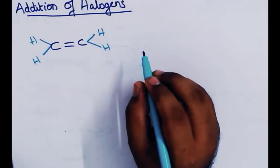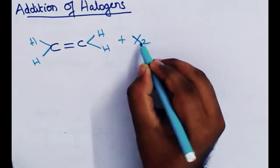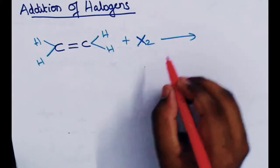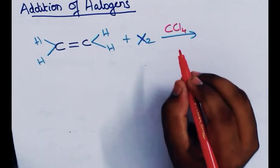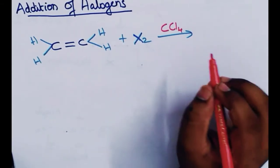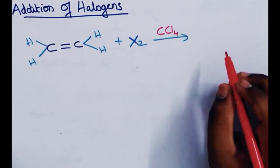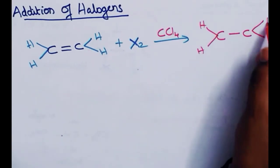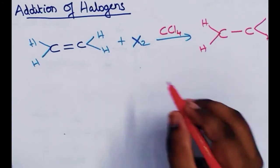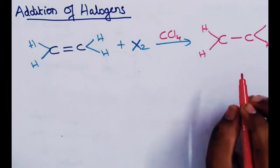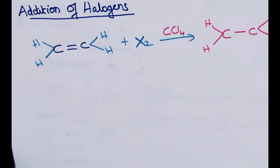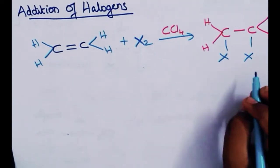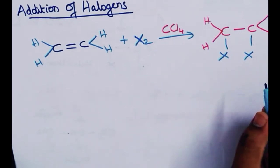This involves a hydrogen atom — X2. The molecule is a carbon tetrachloride medium, which is a very good solvent. All particles will be added to the double bond. We will break the double bond and add a halogen — a dihalide. We call this a vicinal dihalide — gem vicinal.